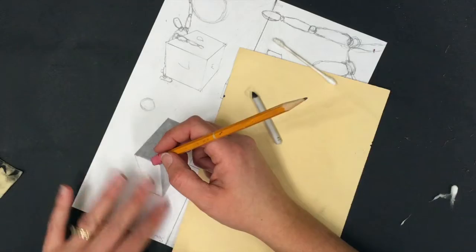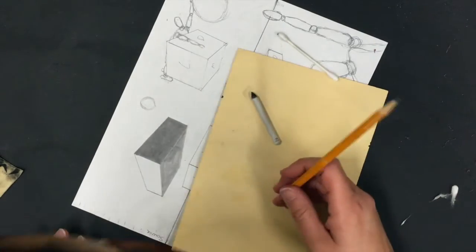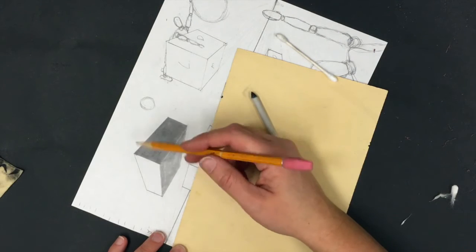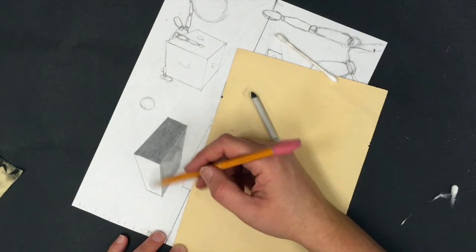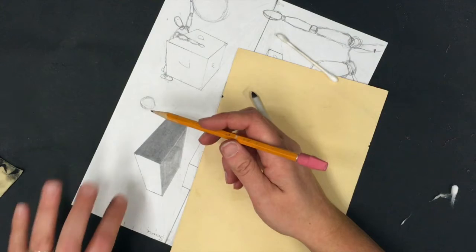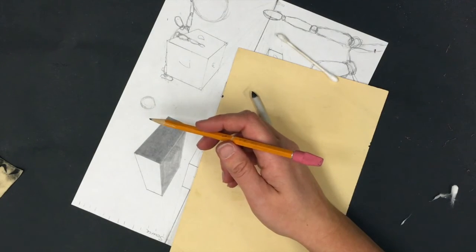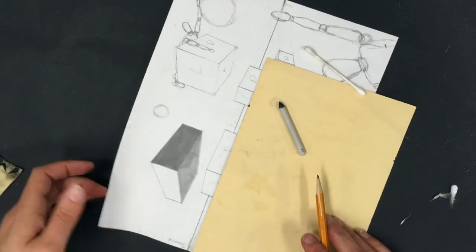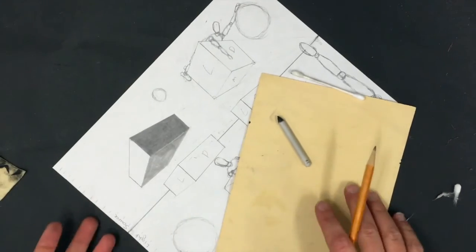Do not re-outline. Let the planes of value meeting each other define where the planes of the box start and stop. That's going to give you the most three-dimensional look. Remember, outlining flattens. We're gonna leave our lights the pure white of the paper.